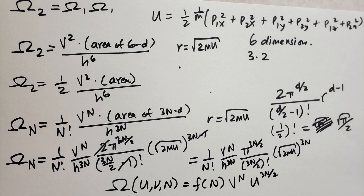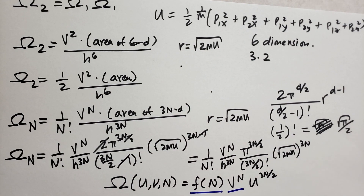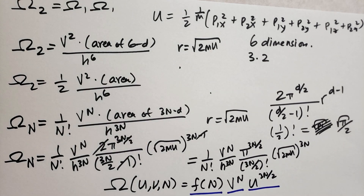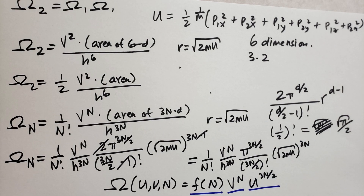We can rewrite this as a formula based on U, V, and N. There's a knotty part that only has N and no V or U, then V^N, and then U^(3N/2). The part that doesn't change as long as you don't change the number of particles, the part that changes according to volume, and the part that changes according to internal energy. This is very similar to what we found for the Einstein solid — we have the energy raised to the power of the number of degrees of freedom.